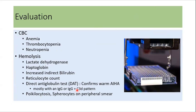For evaluation, we start with CBC, which will usually show anemia, thrombocytopenia, and sometimes neutropenia. To evaluate for hemolysis, LDH can be elevated, haptoglobin may be low, indirect bilirubin may be increased, and reticulocyte count may be increased. The direct antiglobulin test is a very important test for diagnosing warm autoimmune hemolytic anemia and will be strongly positive in Evans syndrome. On blood film, we can see poikilocytosis and spherocytes.